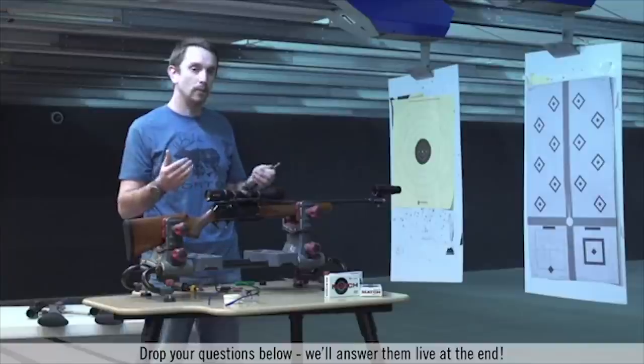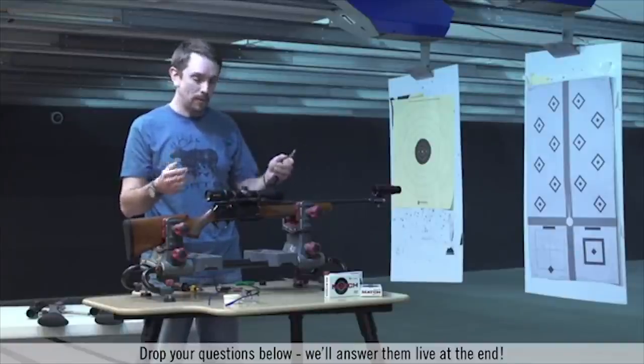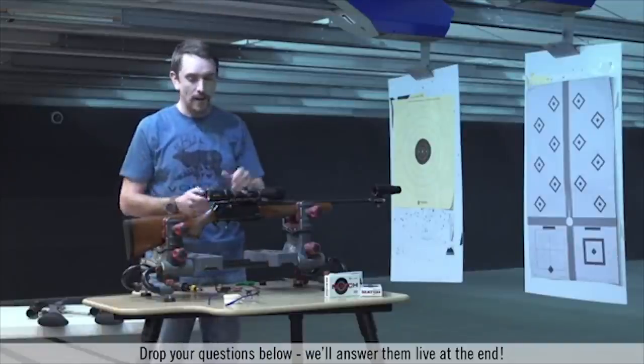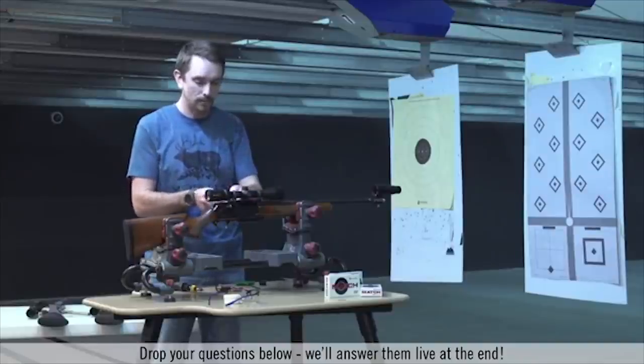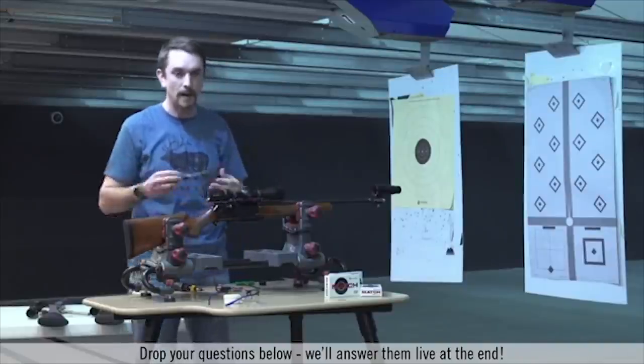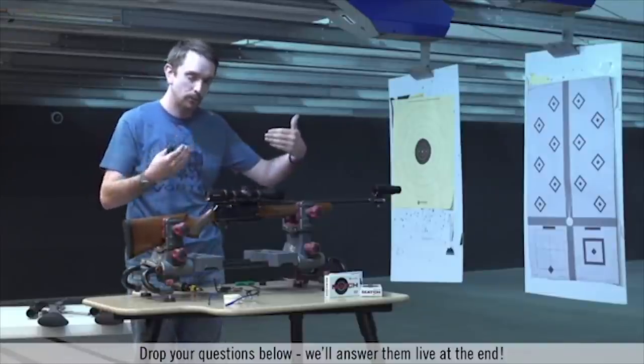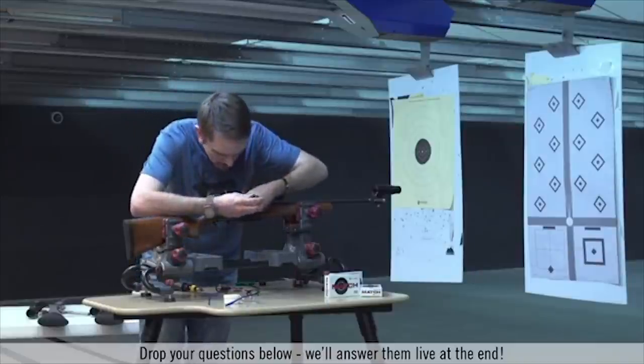So again, we talked about those windage adjustment screws on the back and how they work to pivot the rifle scope. And I need to move this rifle scope on this rifle for a right point of impact. So I'm going to drive it from the right side to the left. So I've got these two windage adjustment screws touching the rings. I'm going to loosen one up just a little bit on the left side, and then I'm going to tension the one on the right. And it's going to pivot the rear of the rifle scope towards me and the objective away.